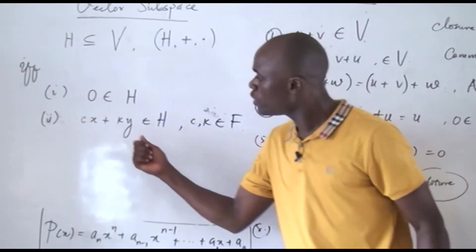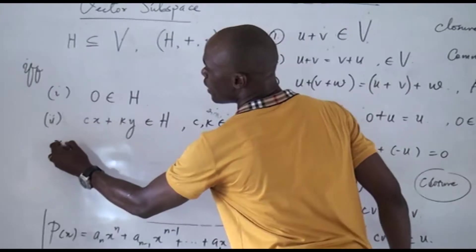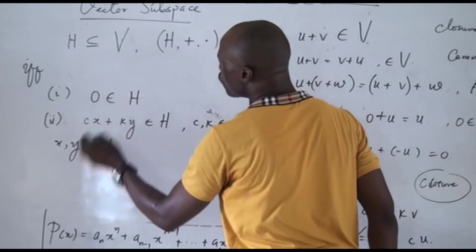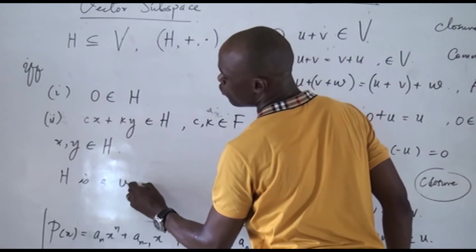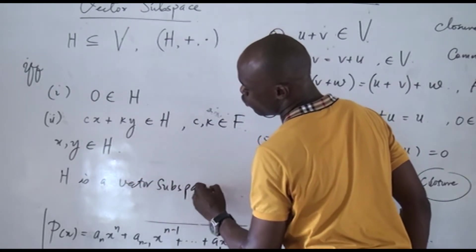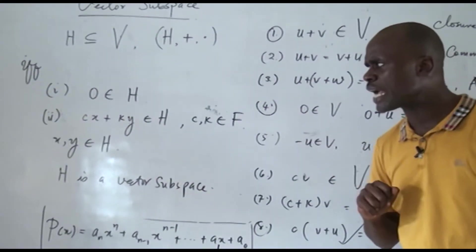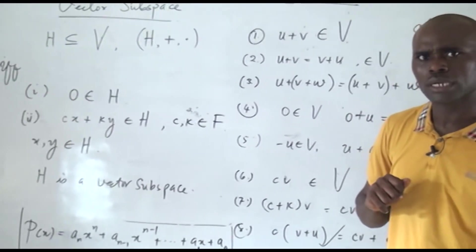If we can prove that this is this, and taking those where X and Y are in H, then we can show that H is actually a vector subspace. And if it's a vector subspace, then it is also a vector space. But I think we should take an example.